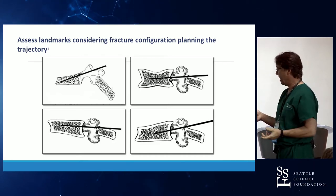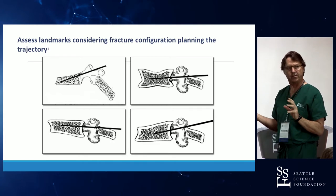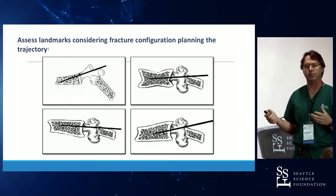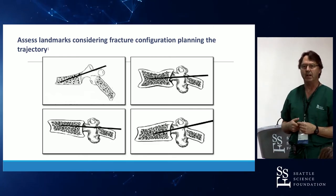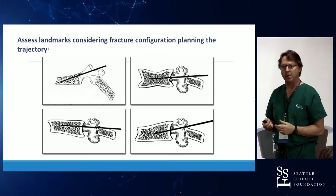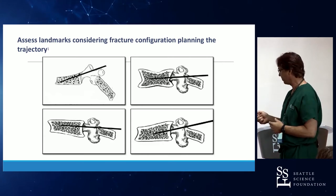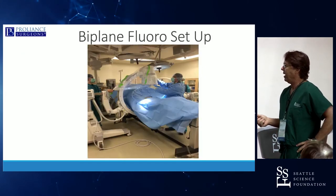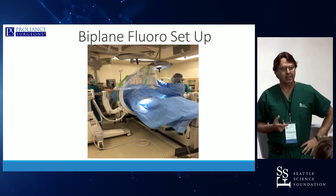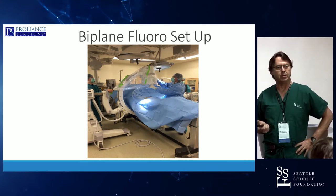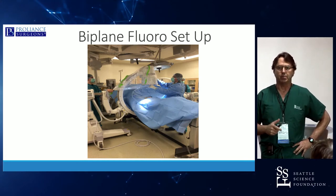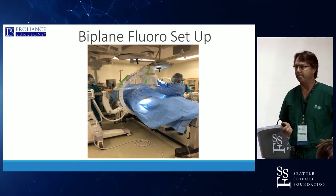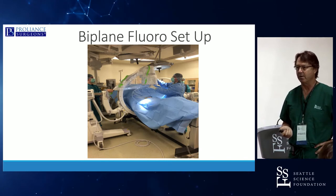When you learn to see this in three dimensions, you'll be able to successfully navigate the vertebral body using this particular approach. The way to set this up ideally for the least amount of radiation and the most efficient use of time is to have biplanar fluoroscopy.